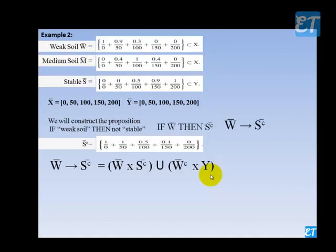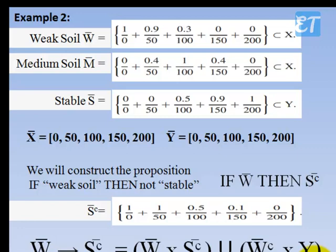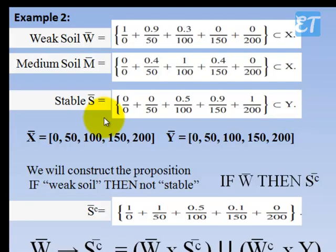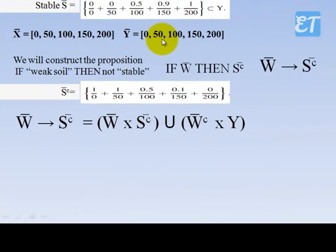Suppose one fuzzy set represents weak soil, denoted W, and it is a subset of universal set X. Another fuzzy set represents medium soil and is also a subset of X. And another fuzzy set S represents stable, which is a subset of universal set Y. The fuzzy sets X and Y are given, and we are going to construct a proposition.